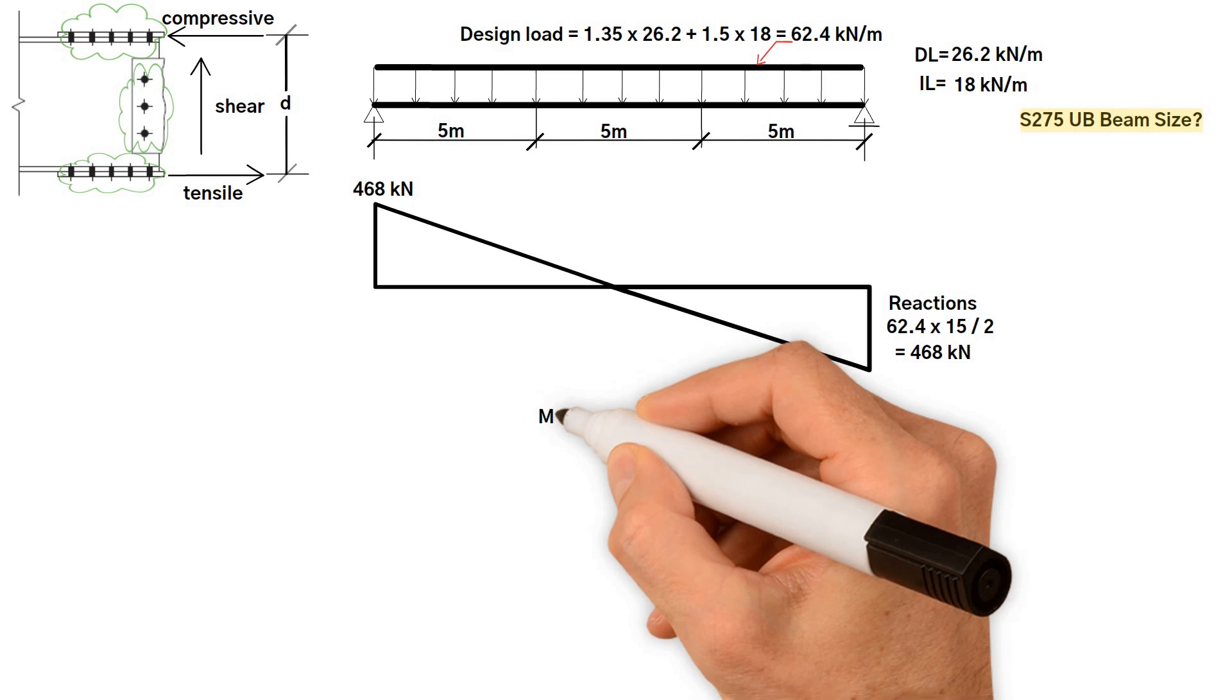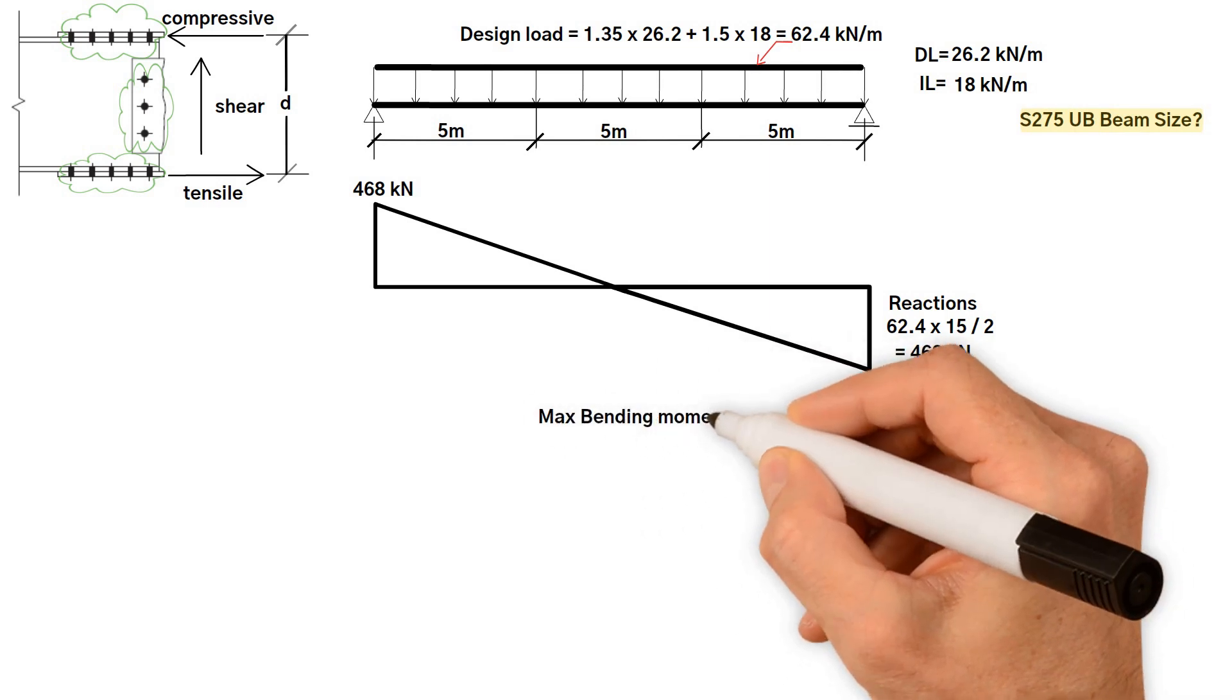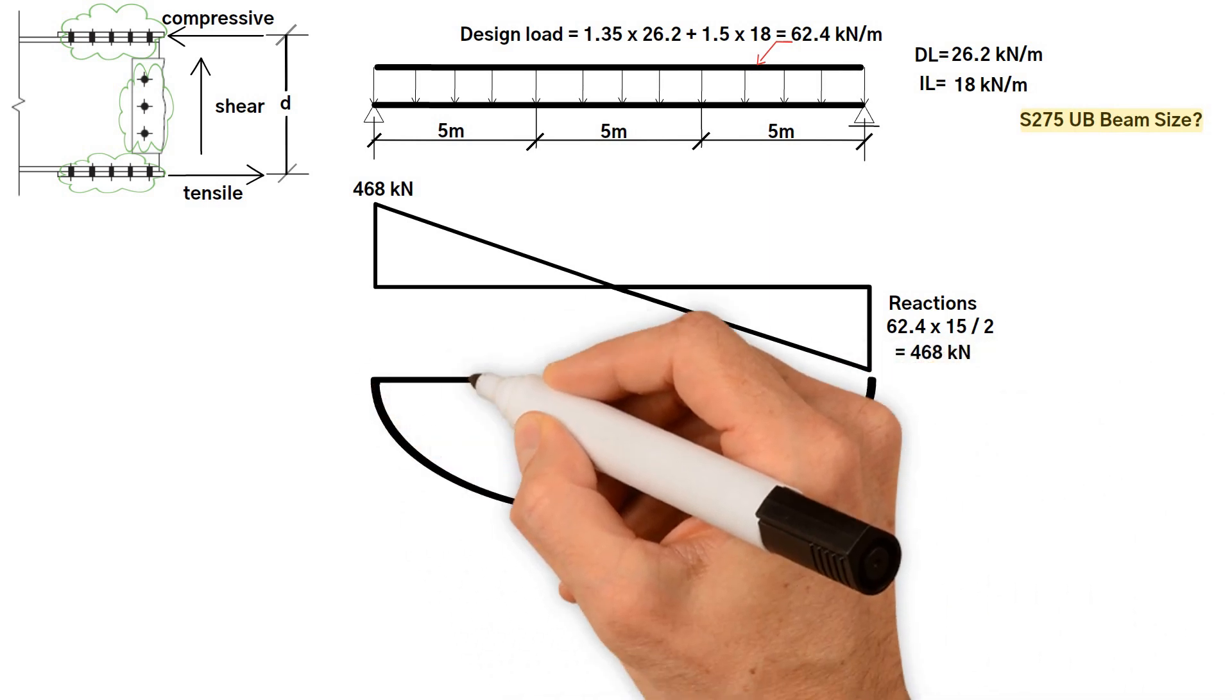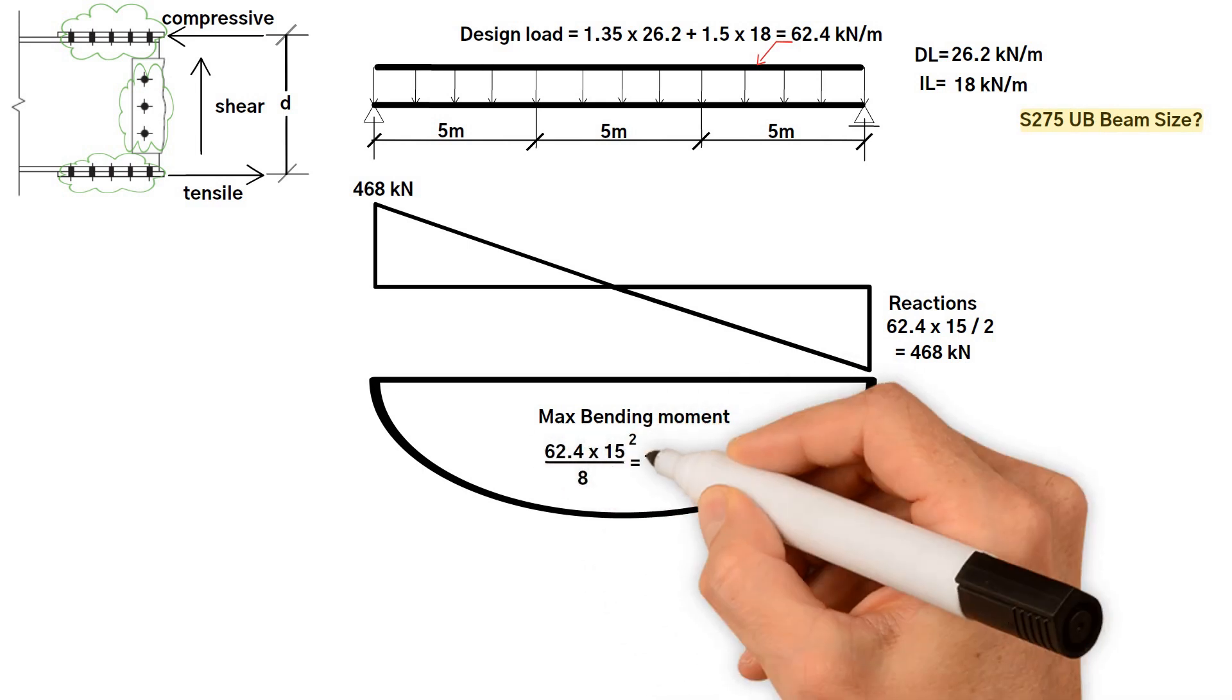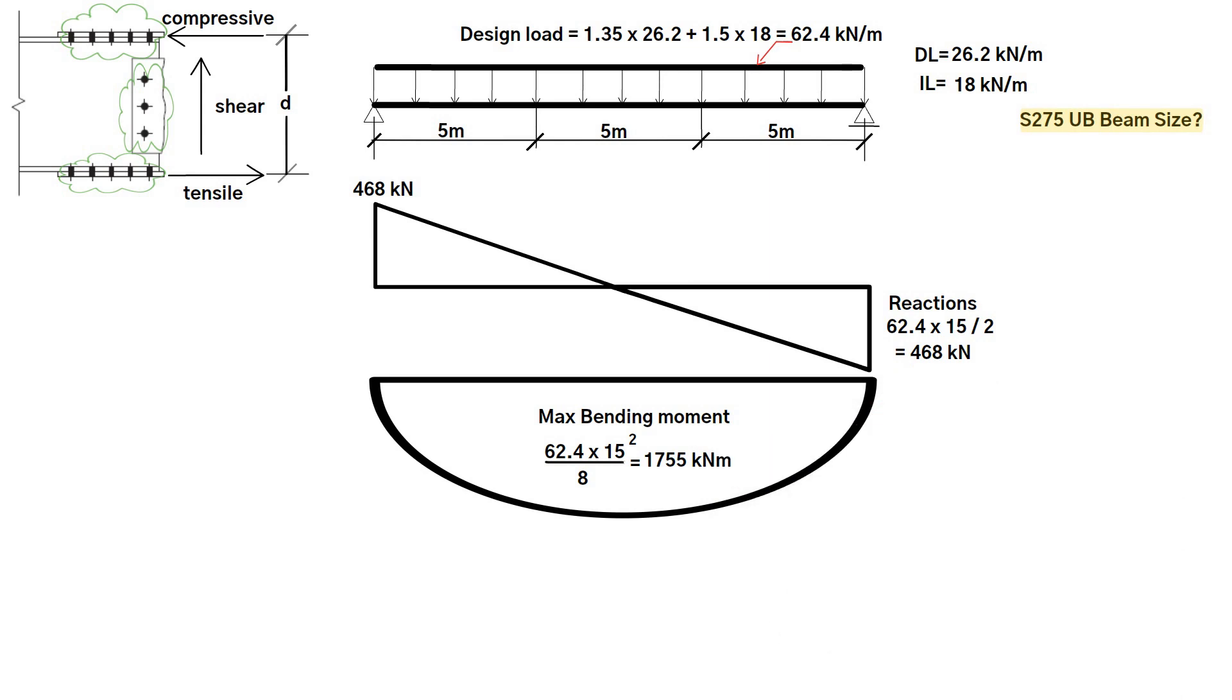Secondly, working out the maximum bending moment, design load times the span over 8, which equals 62.4 times 15 squared over 8 equals 1755 kN per meter.